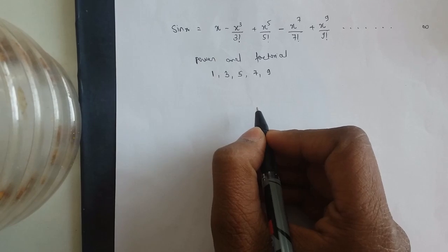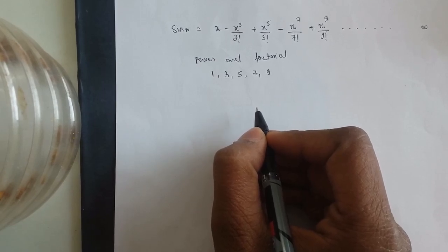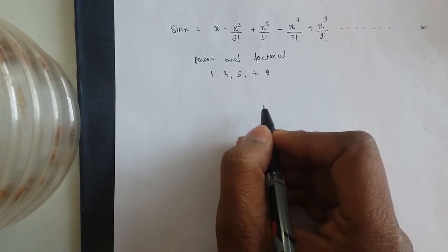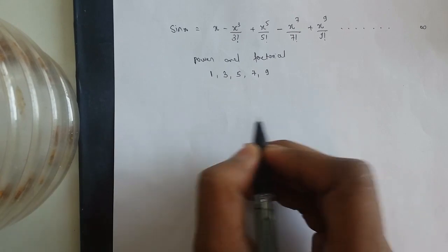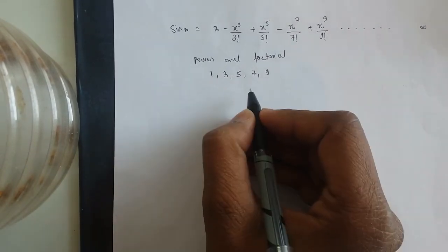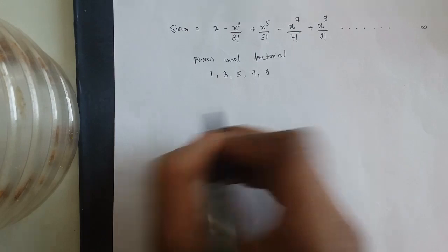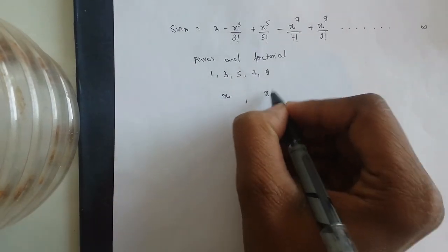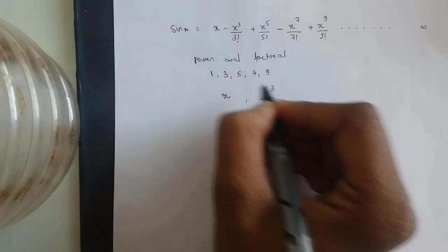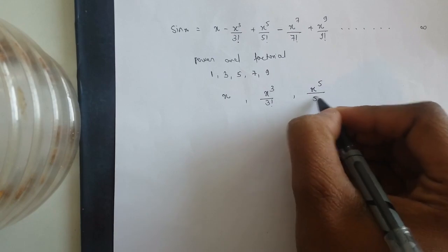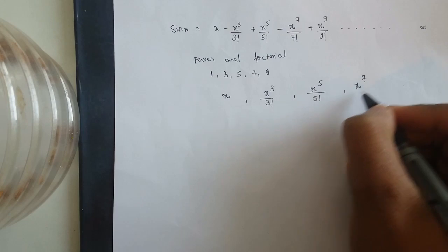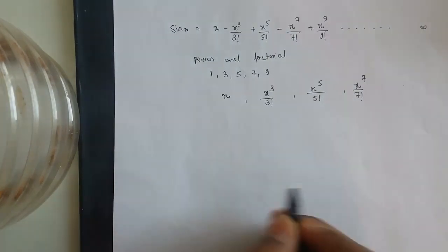First of all, for having a good algorithm we should reduce as many calculations as we can. So by observing this, what we can say about the nth term of the sine(x) function — the first term is x, the second term is x³ / 3! (neglecting their sign), the third term is x⁵ / 5!, and the fourth term is x⁷ / 7!.